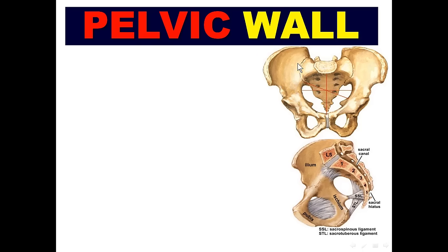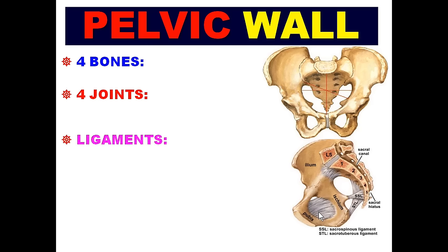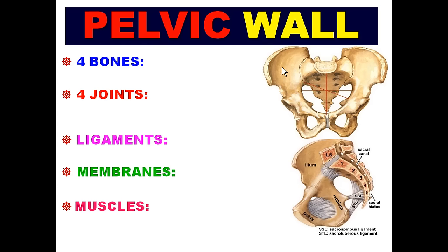We'll start with the pelvic wall. The pelvic wall is formed of bones, joints, ligaments, membranes, and muscles. Regarding the bones, we have four bones: two hip bones, sacrum, and coccyx.